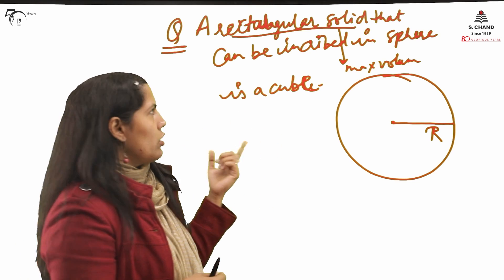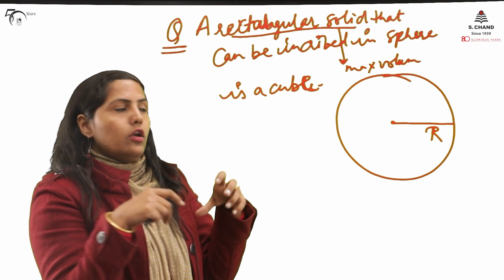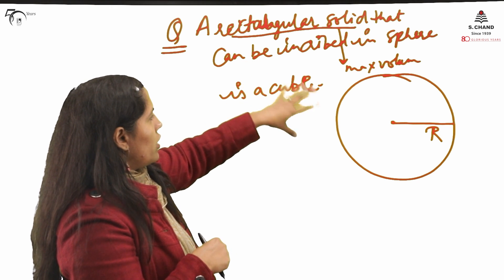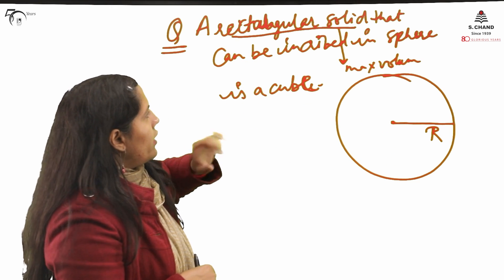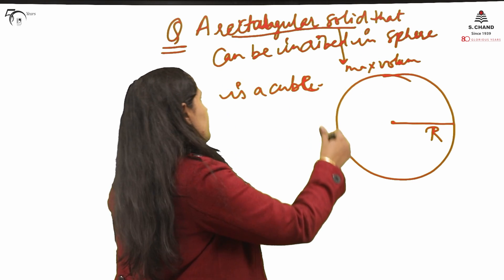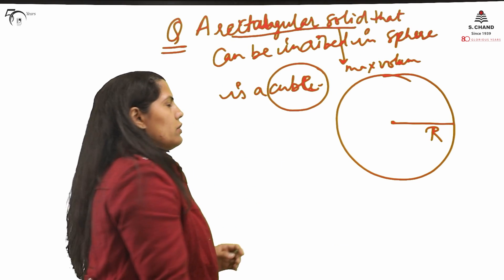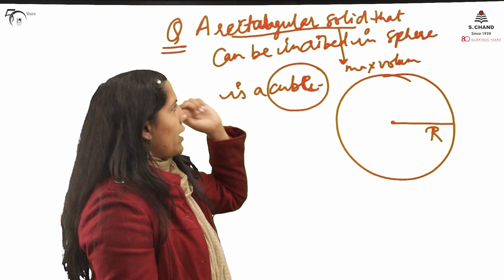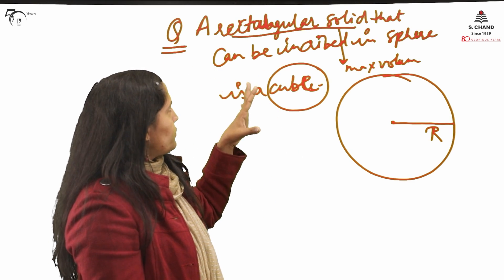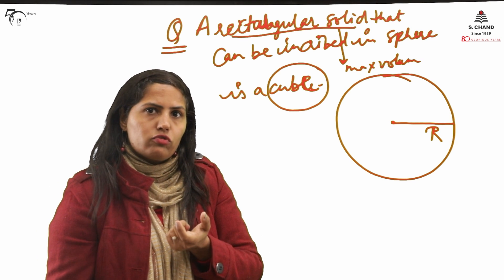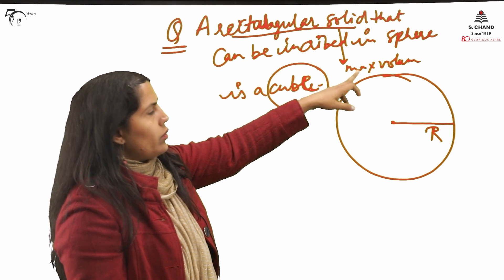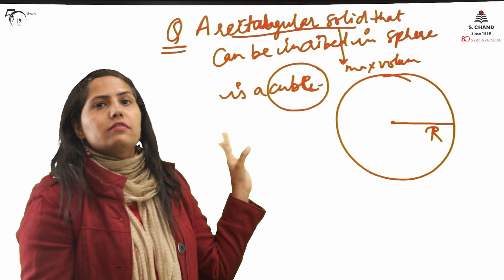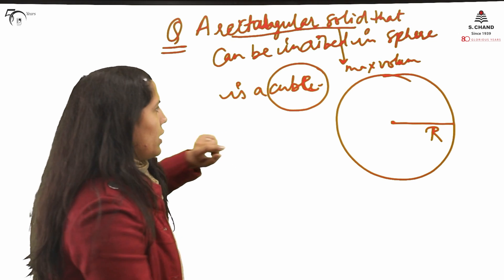It cannot be a rectangular solid in general. But if you are inserting a rectangular solid inside a sphere, it will 100% be of maximum volume and it will be a cube. Everybody knows what a cube is — cube has all sides equal: length equal to breadth equal to height. But in a rectangular solid, this is not the case. So what I will do? I will take one rectangular solid and find at what point it has maximum volume, and ultimately the result should come out to be that it is a cube inscribed inside a sphere.